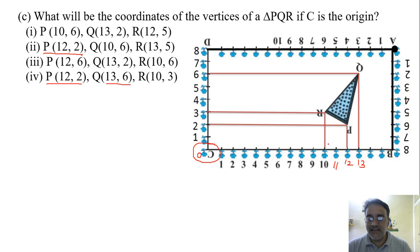The R coordinate, the x coordinate is 10 and y coordinate is 3. So 10, 3. So the correct option, finally we got the correct option is fourth bit.